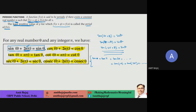Trig functions are periodic. sin(2nπ + θ) = sin θ and cos(2nπ + θ) = cos θ, so sin and cos repeat at every multiple of 2π. But tan has period π — it repeats at every nπ interval, i.e., tan(nπ + θ) = tan θ. This is shown on the right-hand side.